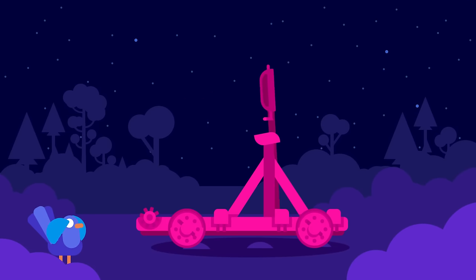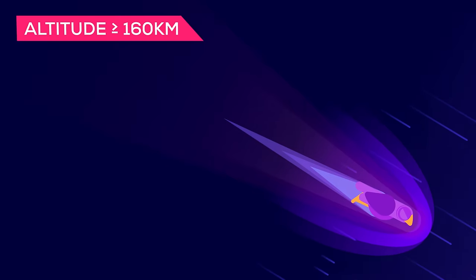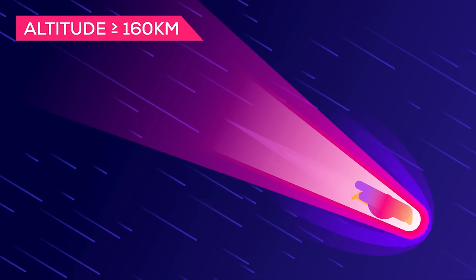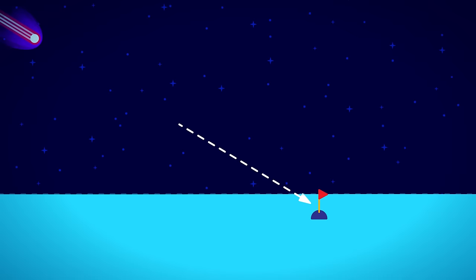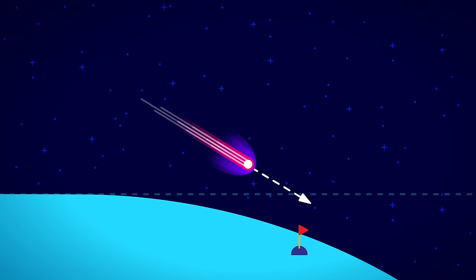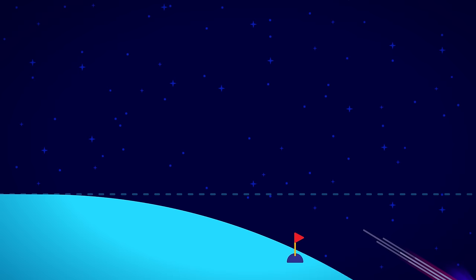Earth is a sphere. So if you're going sideways fast enough, even though you're falling towards earth, the ground will curve away beneath you. So as long as you're above the atmosphere, about 100 kilometers up, you'll be able to stay up there in orbit.